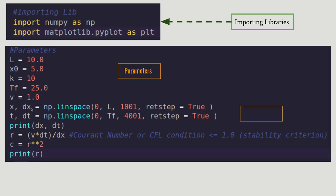For grid creation, use np.linspace from 0 to L with 1001 points and set retstep=True so that dx is returned. Similarly for the time grid: 0 to T_f with 4001 points. Print dx and dt for convenience. Then compute the Courant number r = v·dt/dx, which should be less than 1. Also compute r² stored as variable c, which will be used in the recurrence relation.